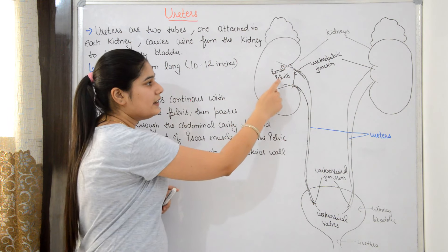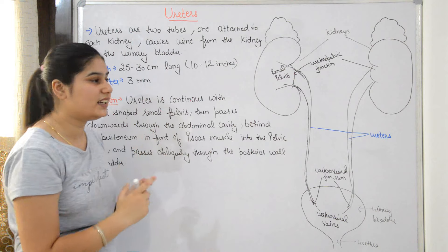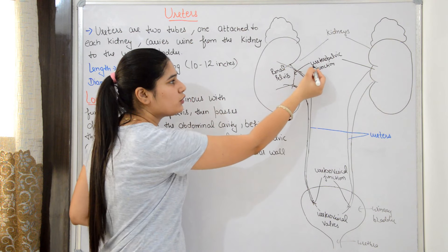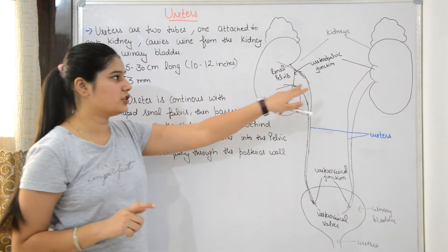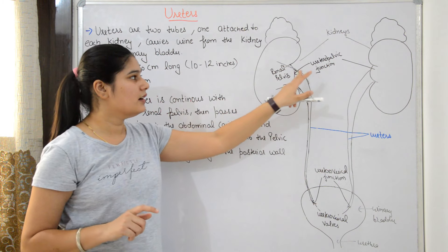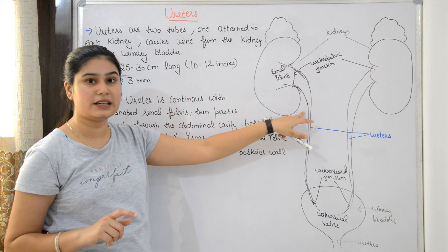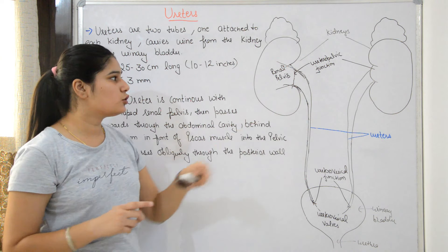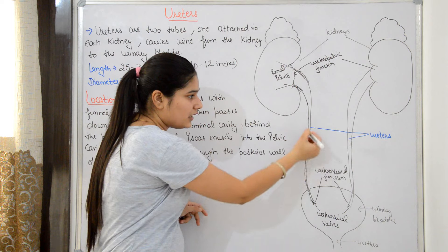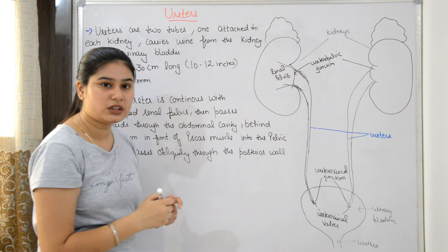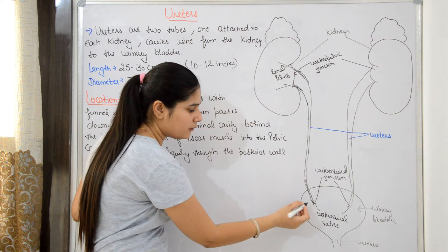Where the renal pelvis is continuous with the ureter, there is a junction called the ureteropelvic junction. Beyond this junction, the ureter is broad at first and then narrows, running in an S-shaped or oblique curve.